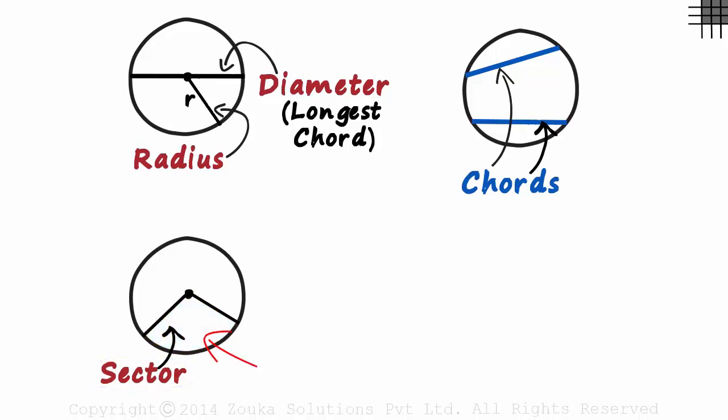Look at the sector carefully. It is bounded by two radii and this green curve. And this green curve also has a name. It's called an arc. It is simply a part of the boundary of the circle. We can call it arc ACB. So this sector is bounded by two radii and an arc ACB.